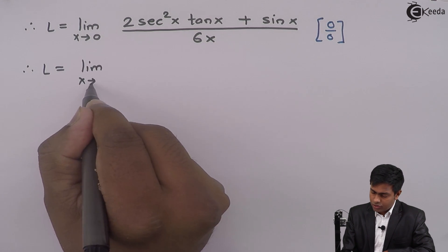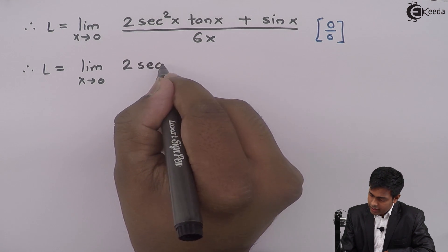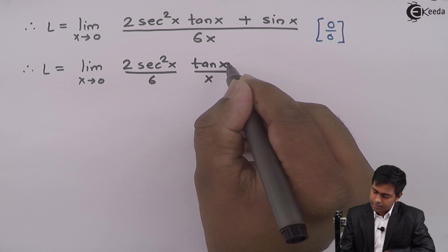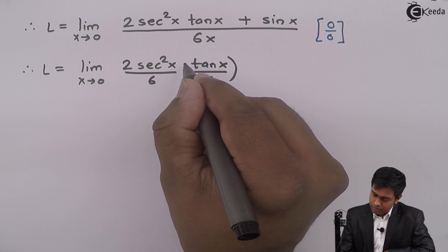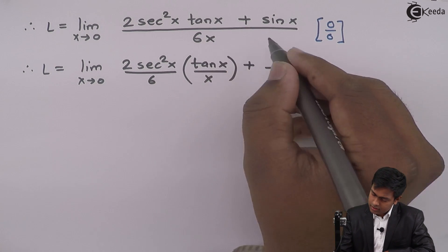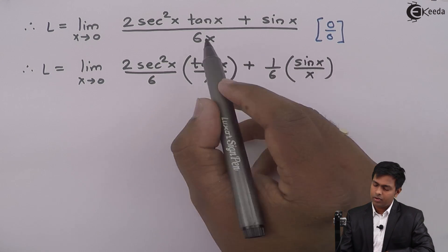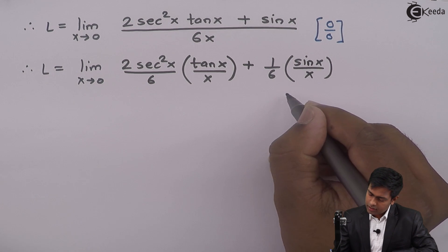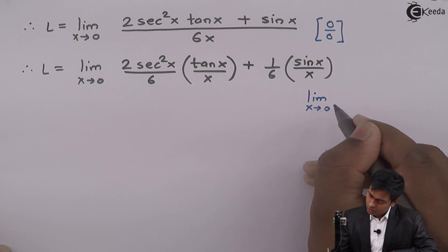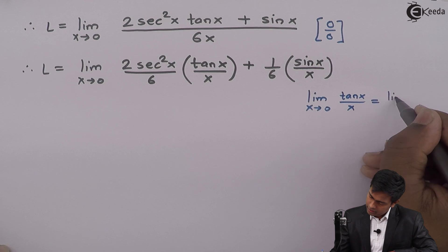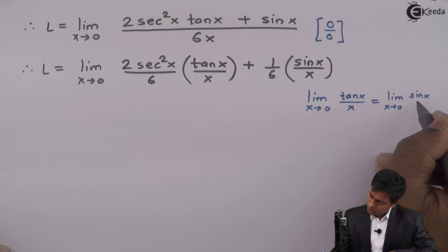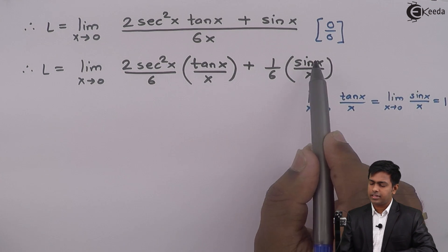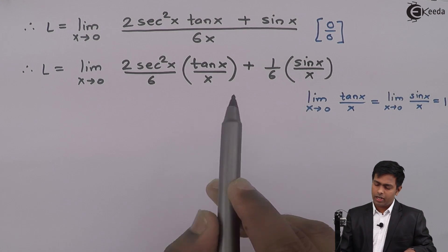So this becomes L equal to limit x tends to 0 of 2 sec square x times tan x upon 6x plus 1 upon 6 times sin x upon x. We can now apply the formulas: limit x tends to 0 of tan x upon x equals 1, and limit x tends to 0 of sin x upon x equals 1. Substituting both values as 1.